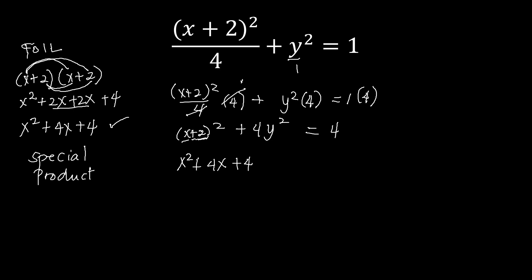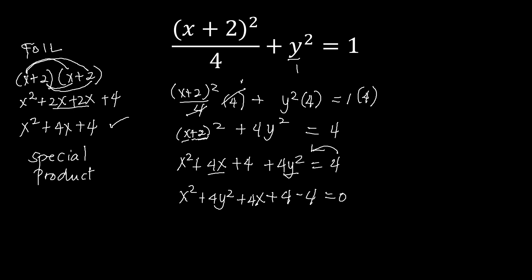We now have 4y squared added, equal to 4. We arrange the terms starting with x squared, followed by 4y squared, then plus 4x — since there is no y term, we go directly to the constant, which is plus 4. Moving the 4 to the other side gives minus 4 equal to 0. Simplifying: x squared plus 4y squared plus 4x, and 4 minus 4 equals 0. This is our general equation of the ellipse.